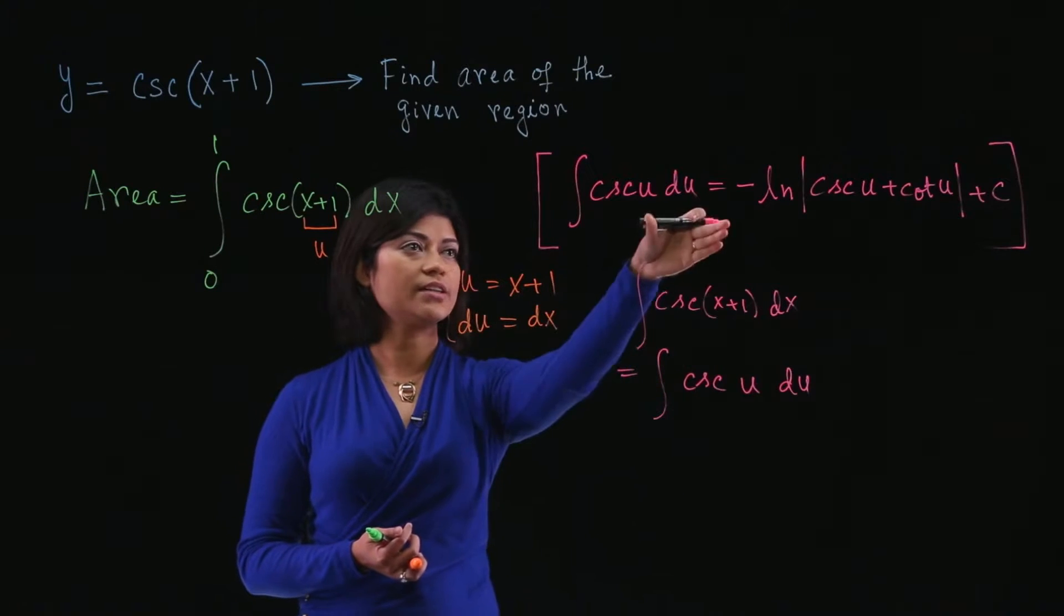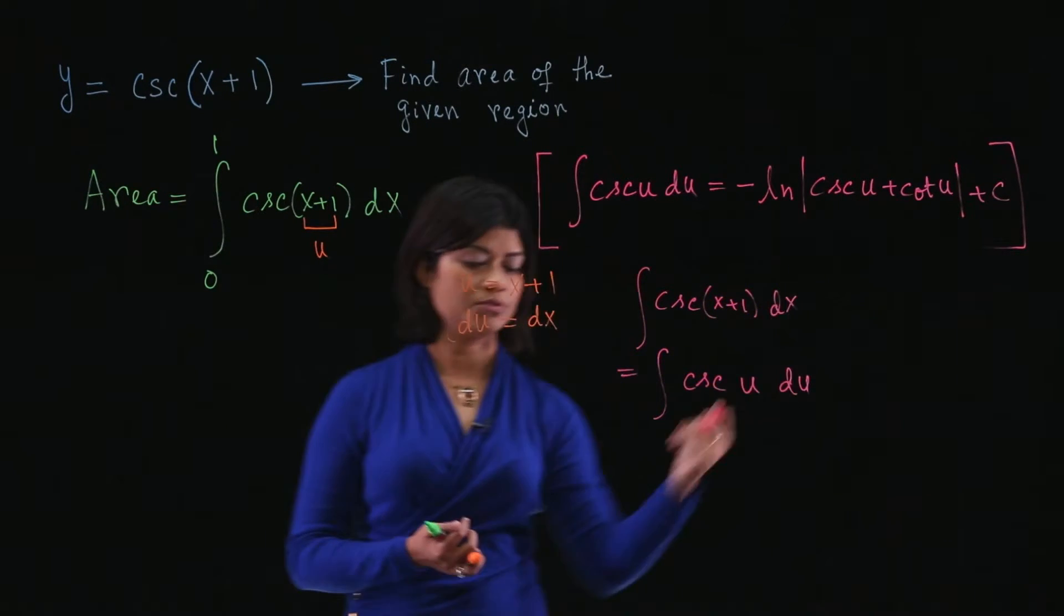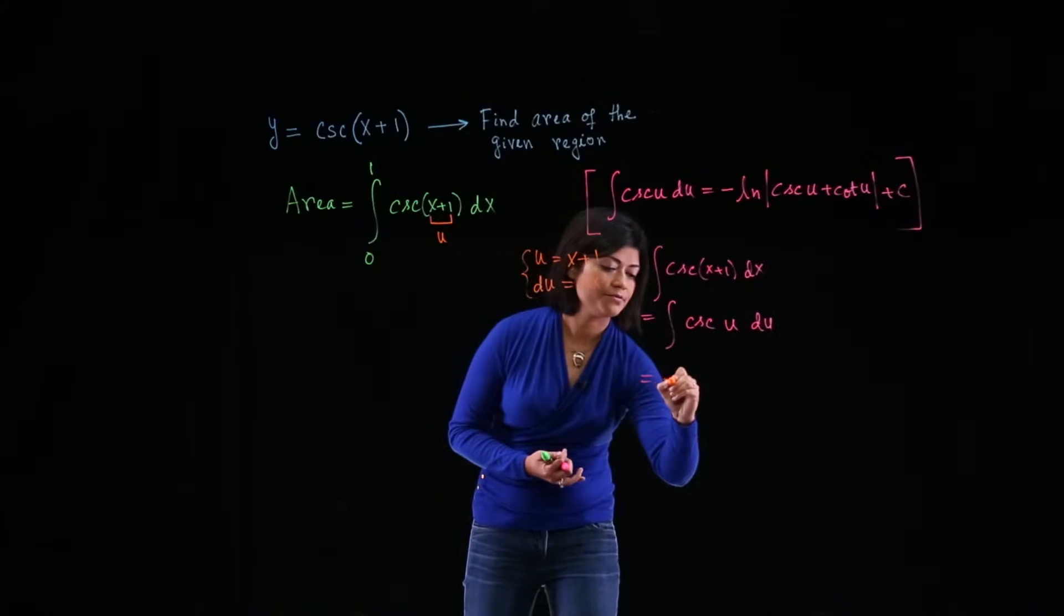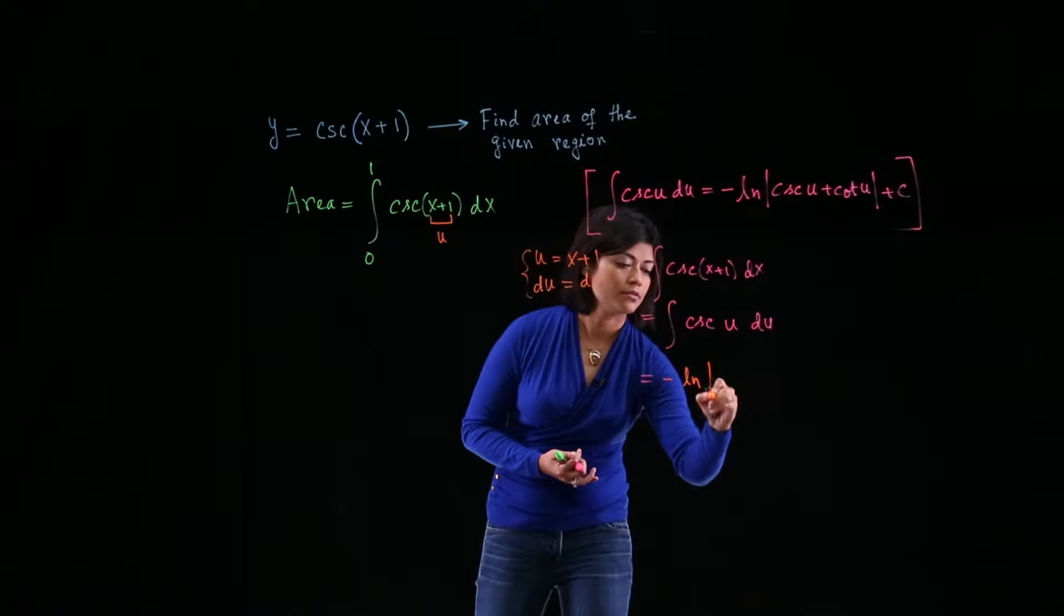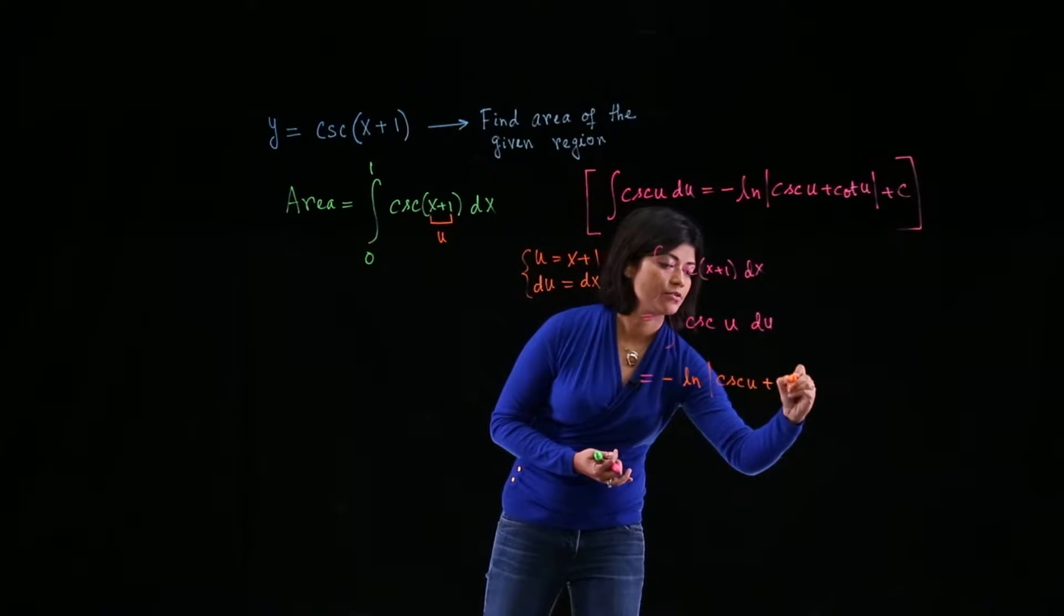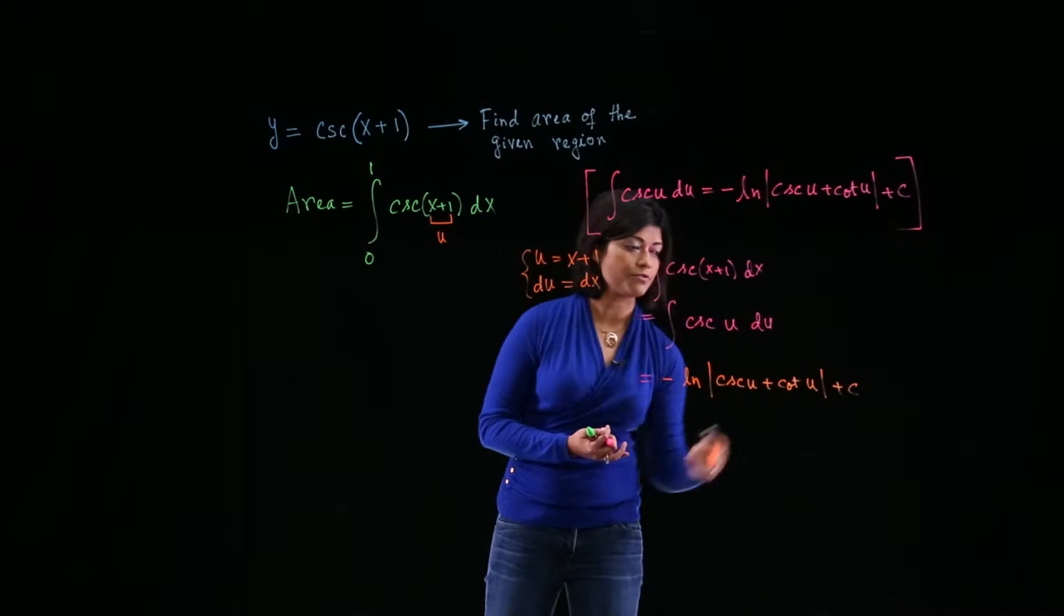So look, it looks just like the one right here. So we know the answer to that. We know the antiderivative is negative natural log absolute value cosecant u plus cotangent u. And since this is indefinite, we have to write plus c.